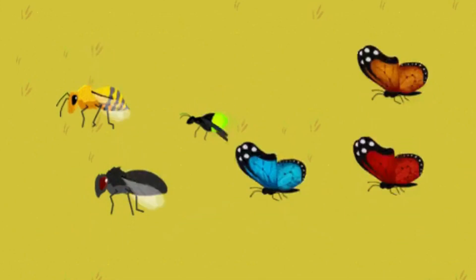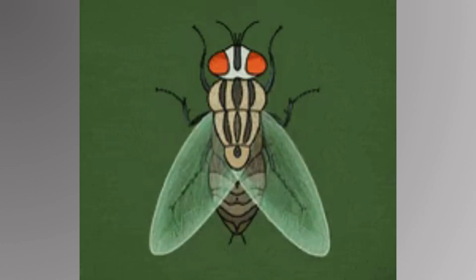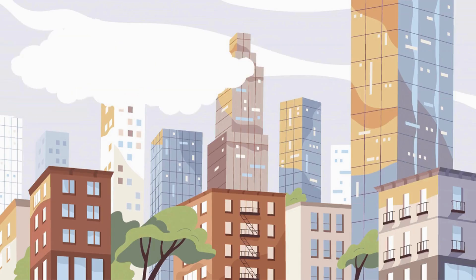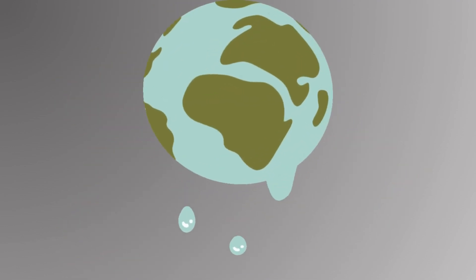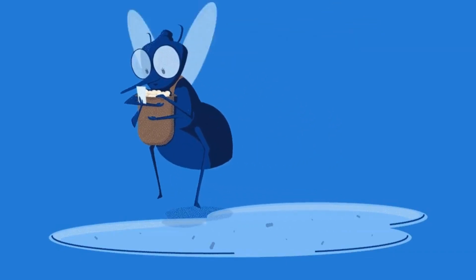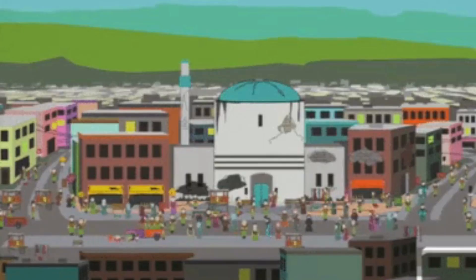Deforestation: Loss of forests forces insects to migrate or adapt, sometimes bringing them closer to urban areas. Water pollution: Stagnant water from human activities often becomes breeding grounds for mosquitoes, increasing their population near human settlements.